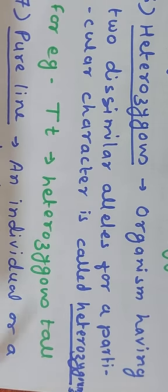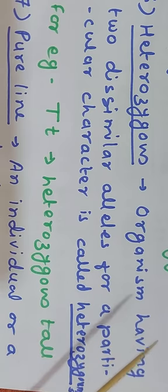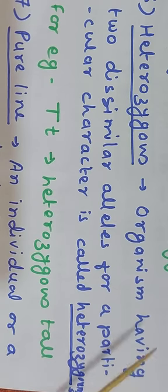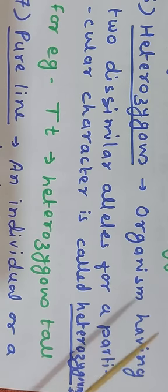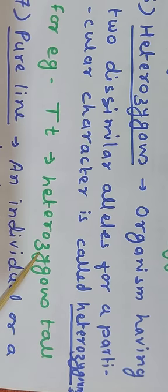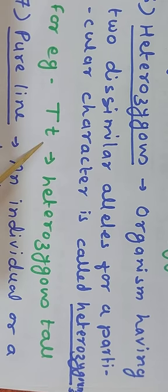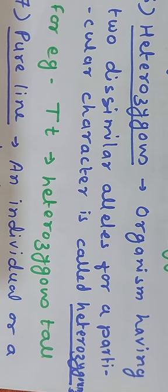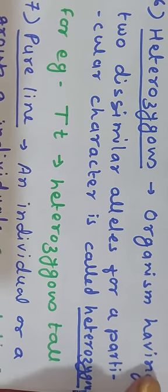To summarize: if the gene pair for a character is made of either both dominant or both recessive genes, the individual is homozygous for that character. But if the gene pair controlling a character contains one dominant and one recessive gene — two dissimilar genes — then the individual is called heterozygous for that character.